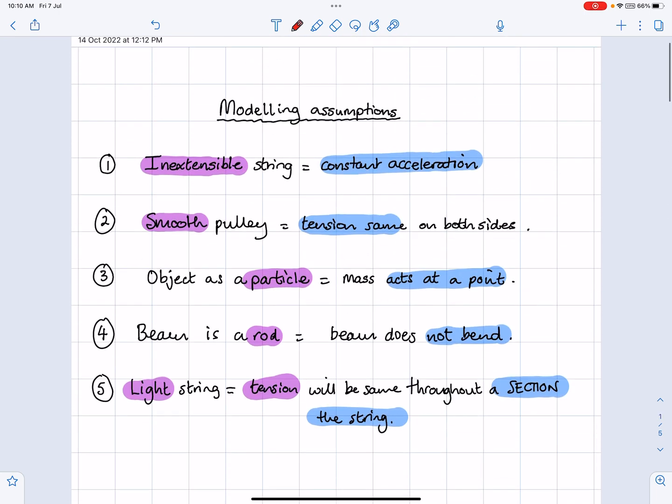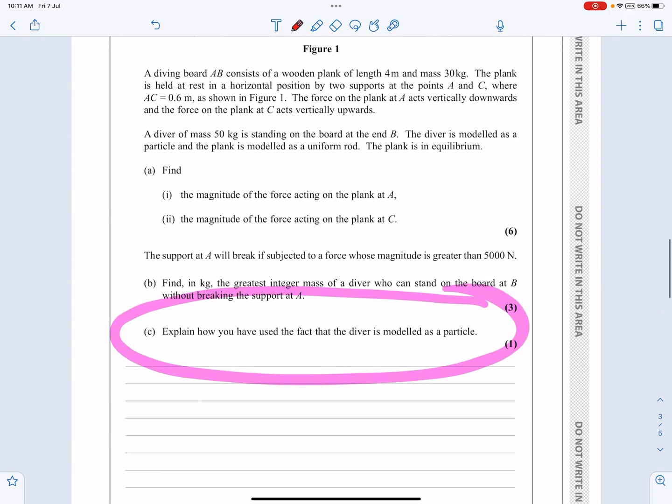Now, light string should mean that tension is going to be the same. Tension is constant throughout the string. This business about being constant throughout a section of the string was from one particular question. What I'm advocating is that you would always go and look at the mark scheme to see the correct language, but the bits in blue here, pretty much if you've got those bits, then I think you're going to be okay when it comes to your answer. It's only one mark question. Let's have a look at another one here.